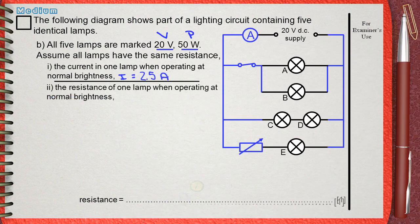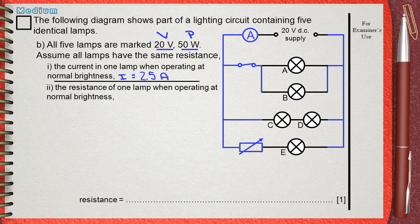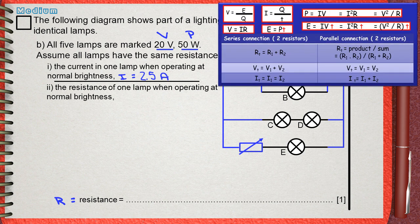The second question. The resistance of one lamp when operating at normal brightness. What is resistance? Resistance is R. Again, we have to remember the 16 rules.